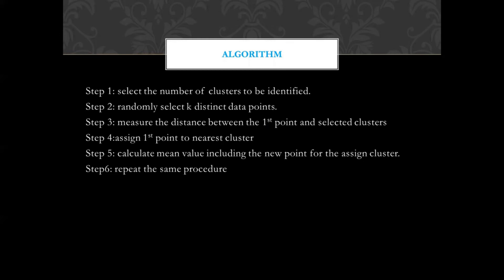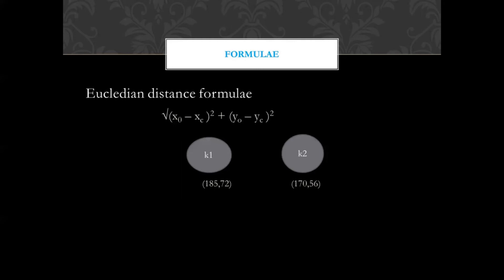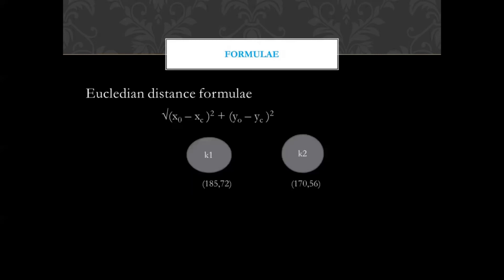Here is a worked example. We have six data points: 185,72 — 170,56 — 168,60 — 179,72 — 182,72 — 188,... and so on. I have set k equals 2. I randomly selected the first two centroids: k1 is 185,72 and k2 is 170,56. Now we need to find the Euclidean distance.